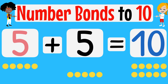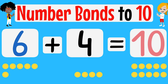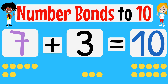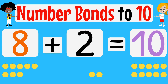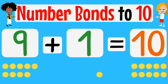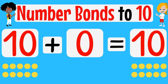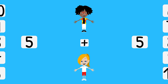5 and 5 equals 10. 6 and 4 equals 10. 7 and 3 equals 10. 8 and 2 equals 10. 10 and 0 equals 10. Let's sing our number bonds again!